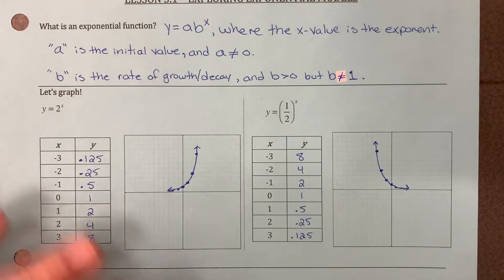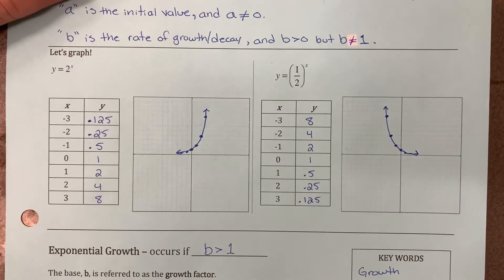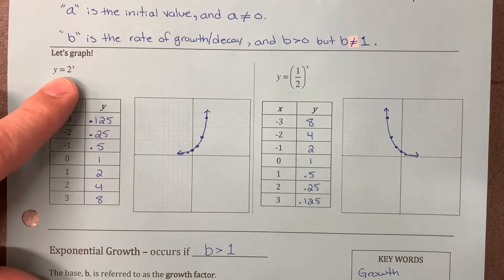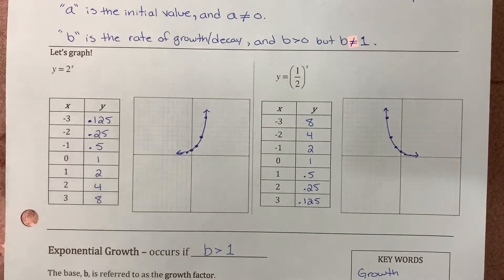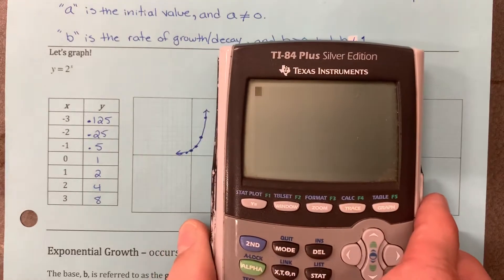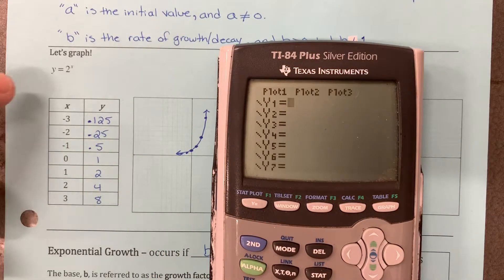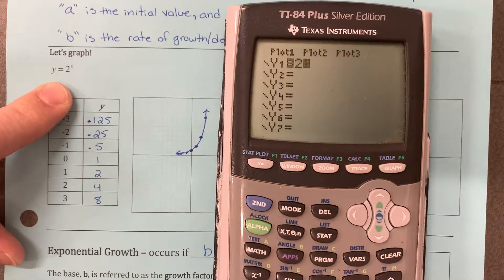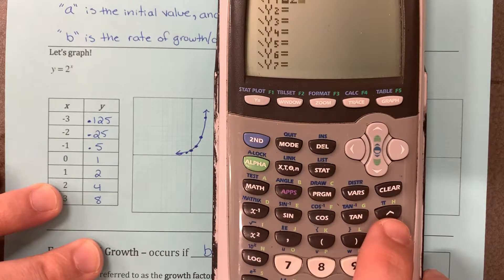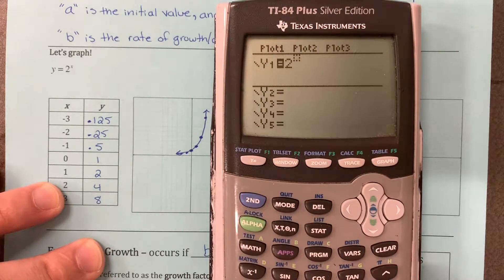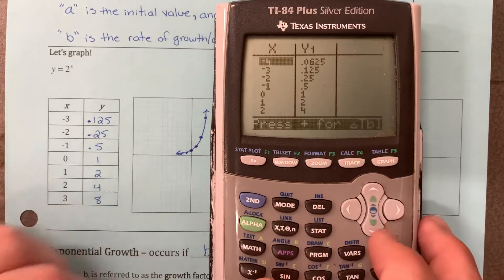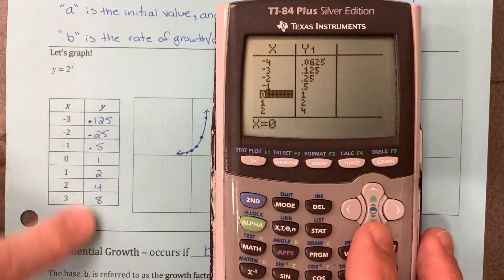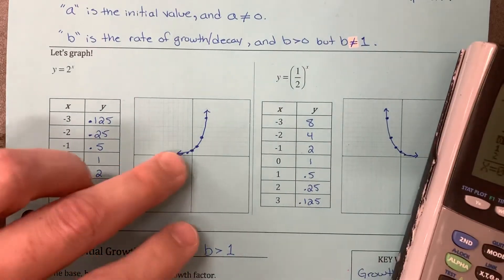So here are two equations that represent what an exponential function looks like. Here's 2 to the x power and 1 half to the x power. And to make this table of values and to save some time, what I did was I went to the y equals screen and I typed in that equation. Now, to raise it to the x power, right here is your power button, the carat key. So if you push that and you raise it to the x, you can then go to your table of values by pushing second and graph, or second table. And that shows you your list of numbers that we fill in here. And then we just plot those points on the graph.